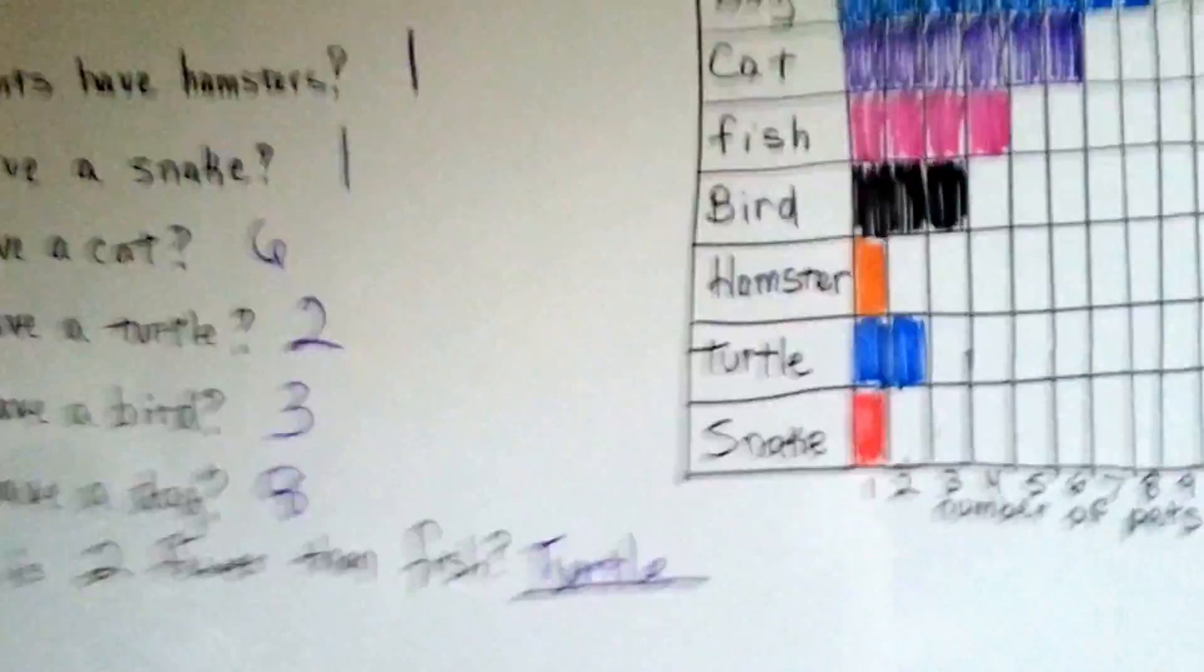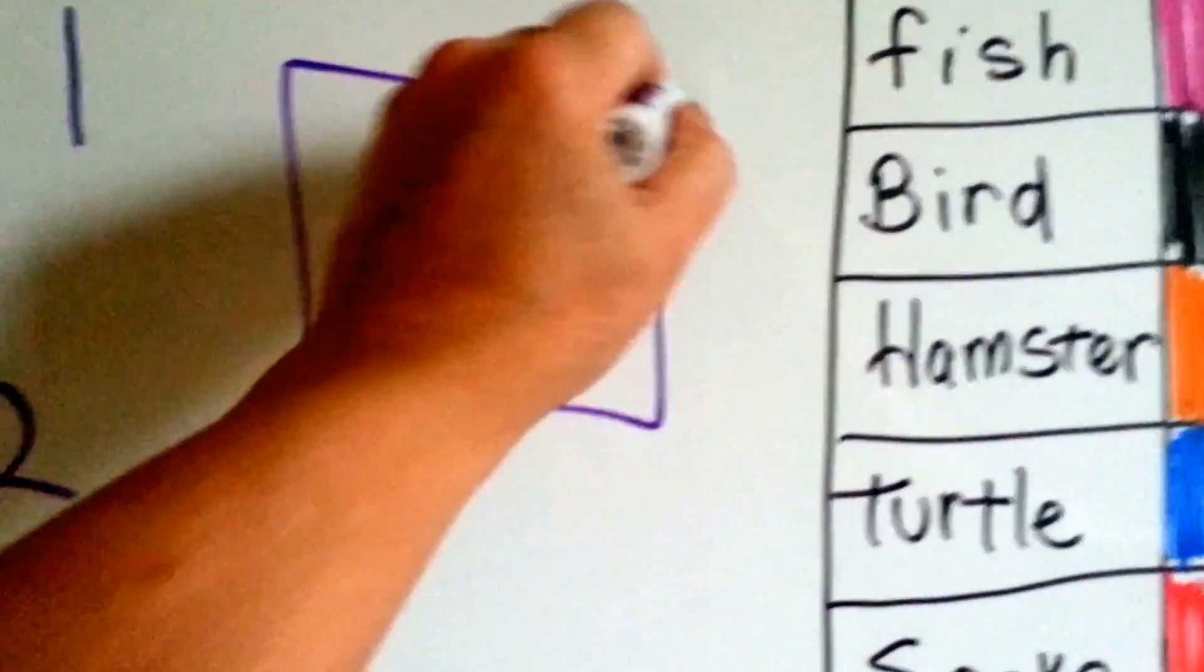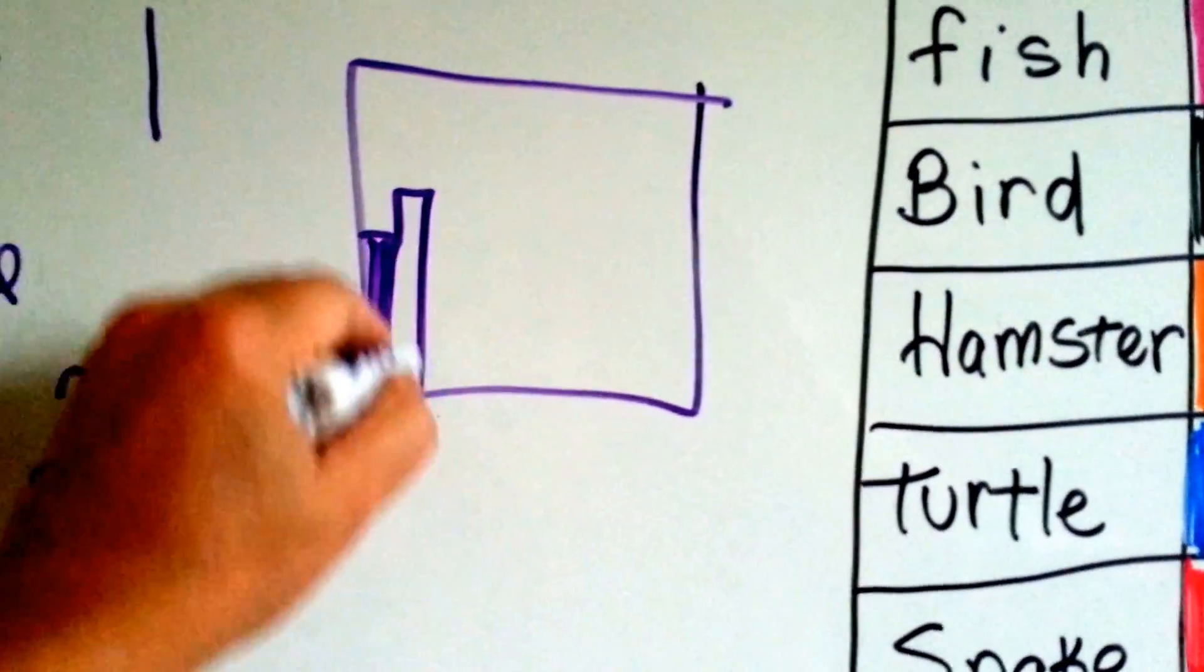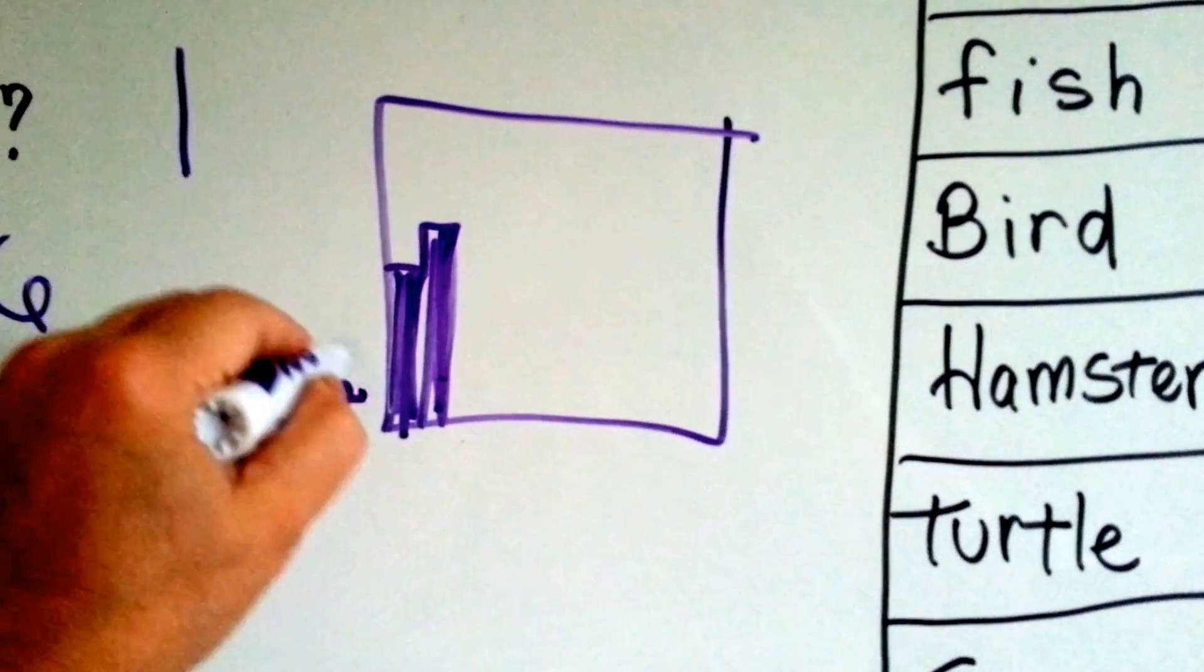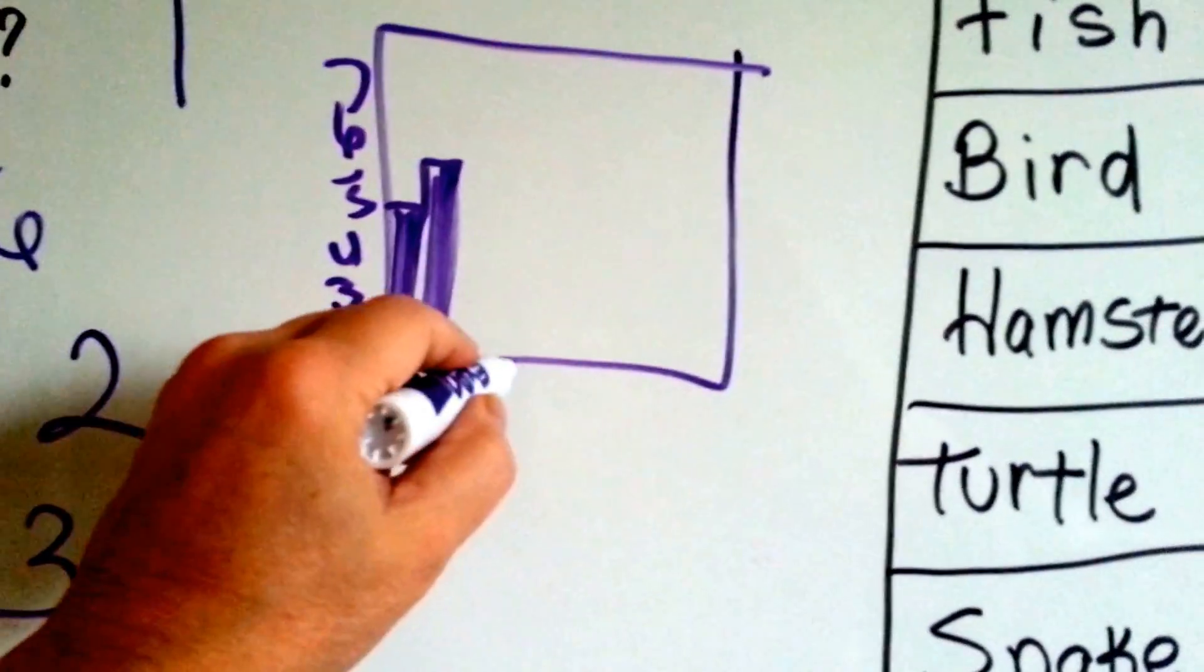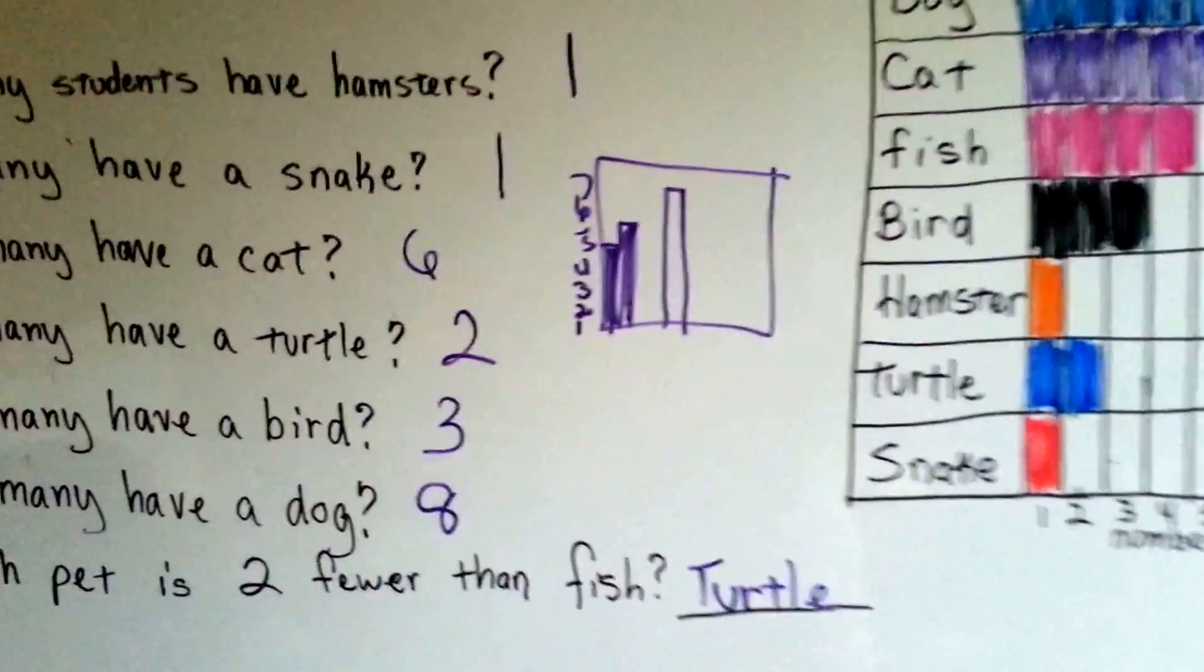Bar graphs can also go up and down. Sometimes the bar graph has the bars going in an up and down fashion like this. And then the numbers are on the side here. Like that. And the bars go up instead of sideways. It's still a bar graph.